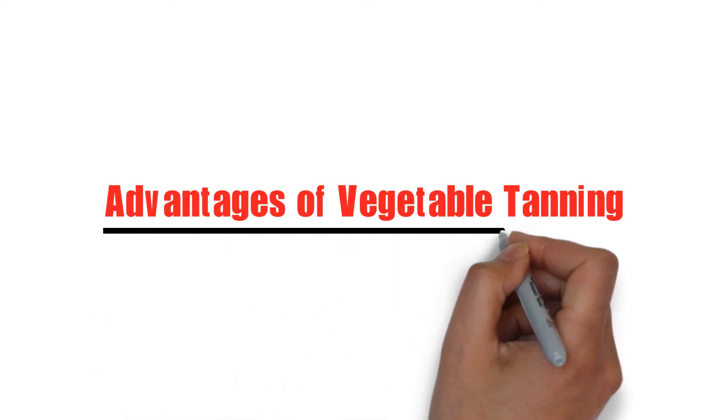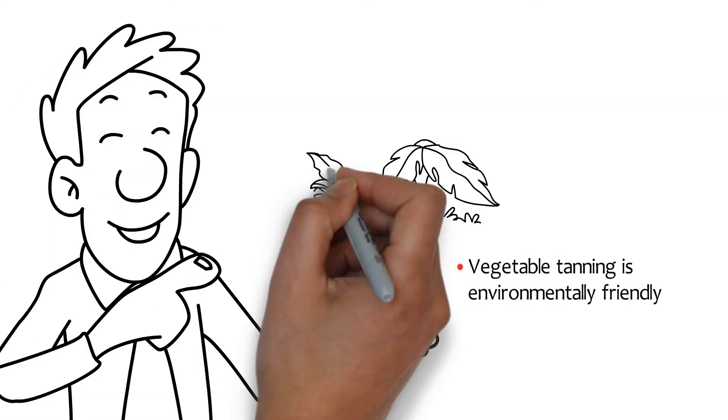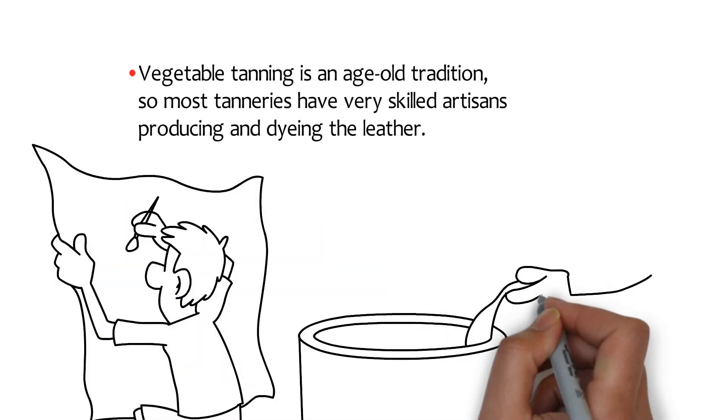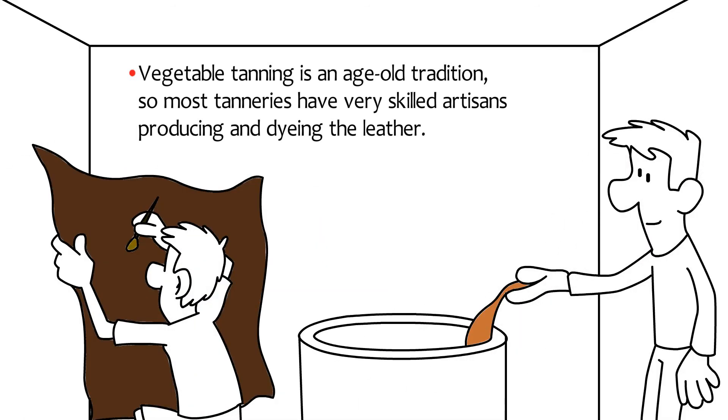Advantages of Vegetable Tanning. Vegetable tanning is environmentally friendly. Vegetable tanning is an age-old tradition, so most tanneries have very skilled artisans producing and dyeing the leather.